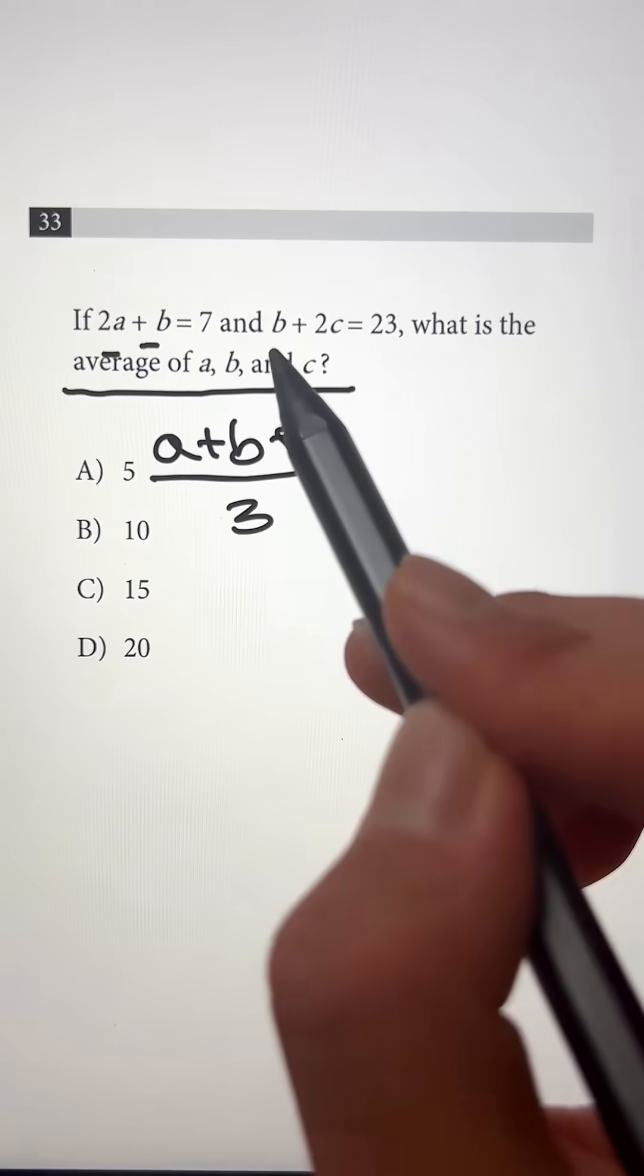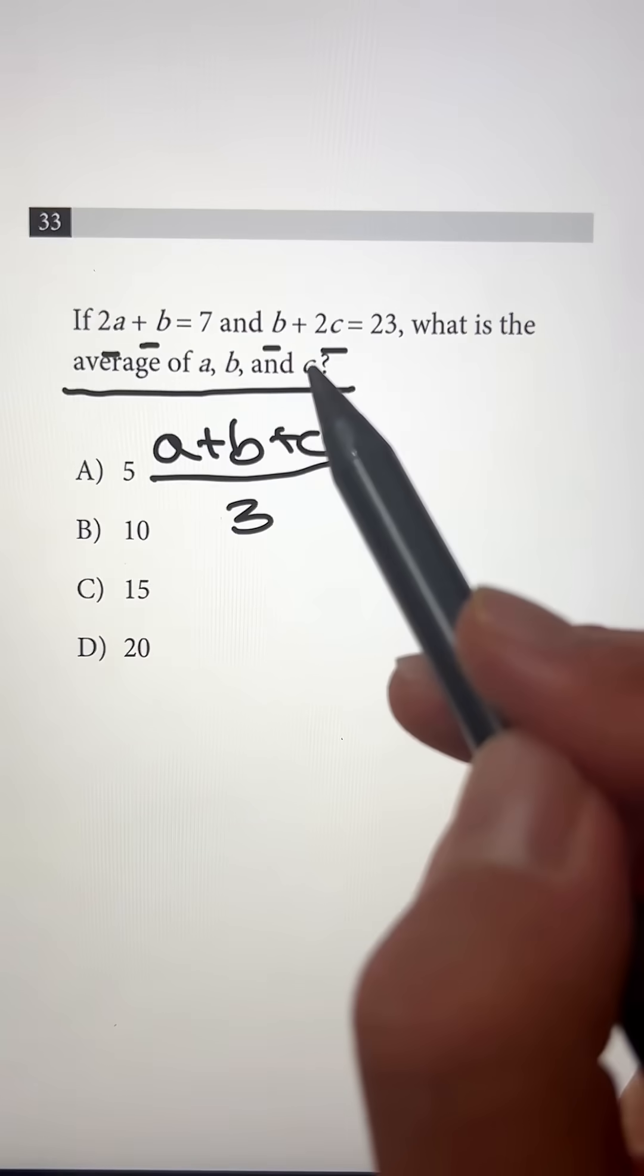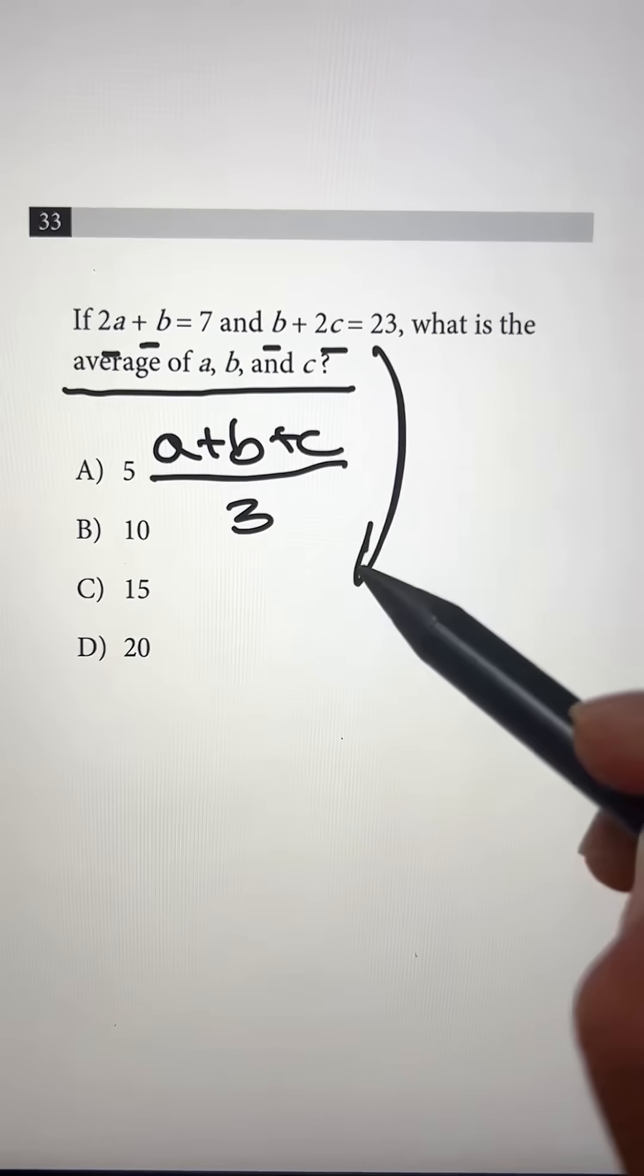Now the first one only has a and b in it and the second one only has b and c in it. So let's try something different and add both of them together.